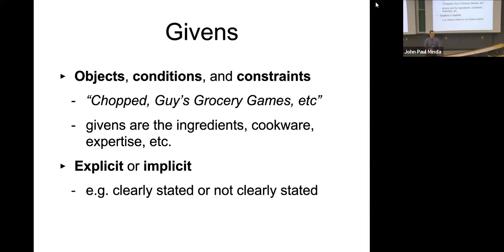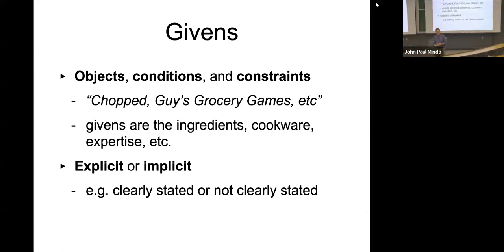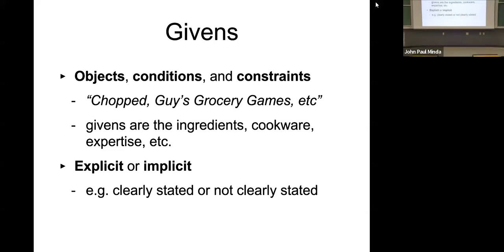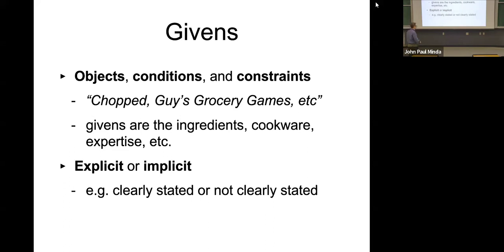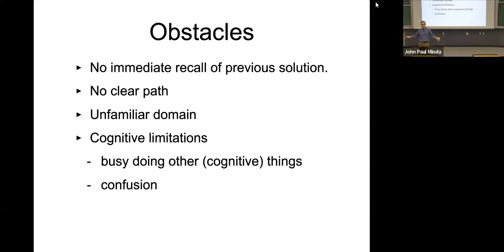Some givens help — familiarity with a particular ingredient or technique. Some are constraints — not knowing how to work with a particular ingredient. Givens can be explicit or implicit. Obstacles are everything that interferes with reaching the goal: no immediate recall of a solution, no clear path, an unfamiliar domain, cognitive limitations like fatigue or divided attention, or a negative mood that narrows attentional focus.